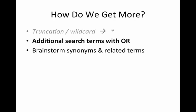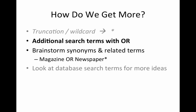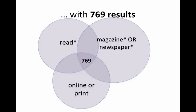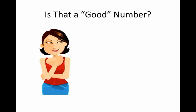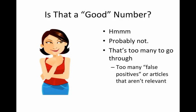We can brainstorm synonyms and related terms. For reading in print versus online, the problem is very similar to what newspapers are going through — reading newspapers in print versus online. So if you're interested in how this works for magazines, you should also look at how it works for newspapers. If we do read*, magazine*, newspaper*, and online or print, we get 769 results. Is that a good number? Probably not — it's too many to go through, and there are likely many false positives.